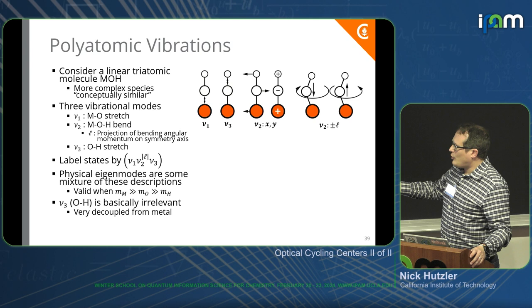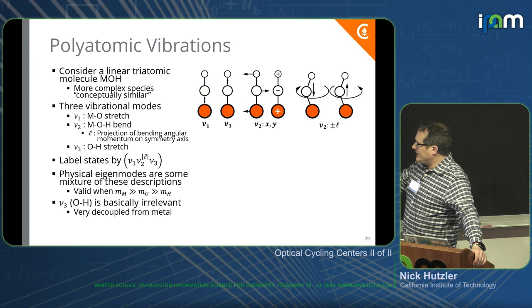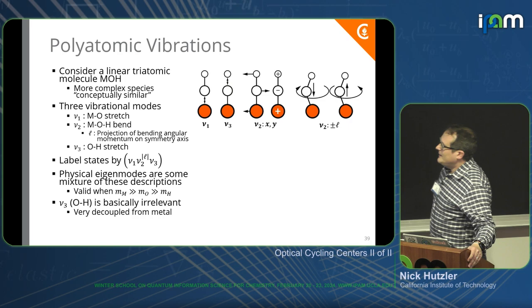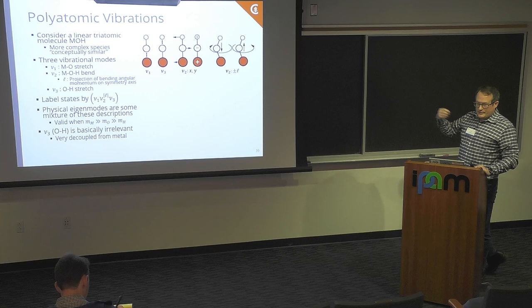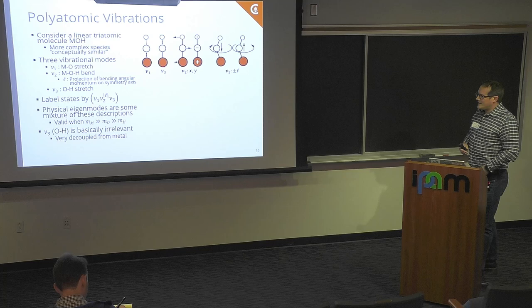That gives you an extra quantum number for this nu2 mode, which is L — the projection of the bending angular momentum on the symmetry axis. We label vibrational states by writing out these three quantum numbers, with a superscript L on the bending mode. L is an integer that goes between plus nu2 and minus nu2 in steps of two, not steps of one. Nu1, nu2, and nu3 are integers that count the vibrational quanta.